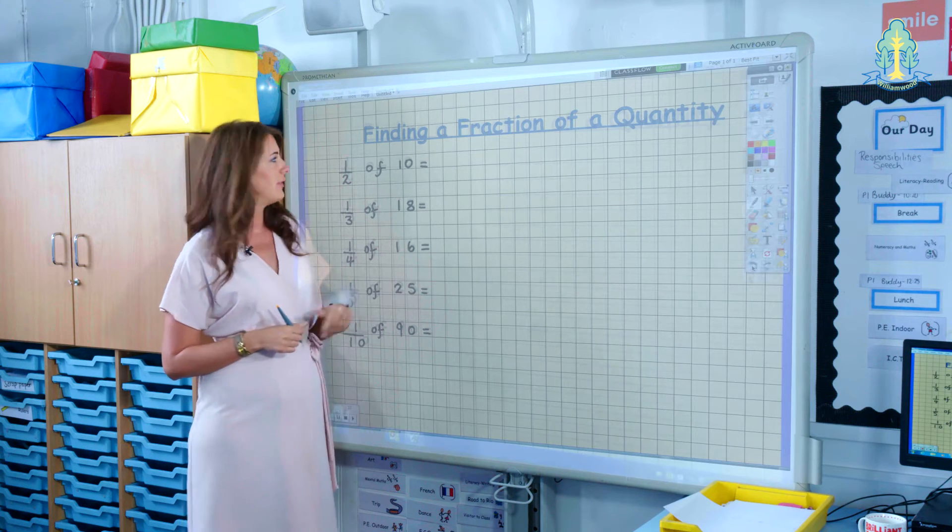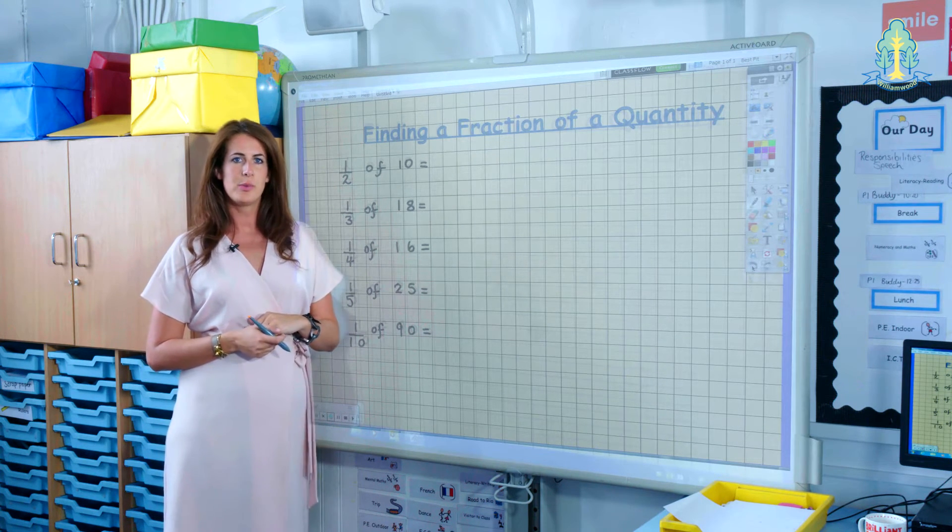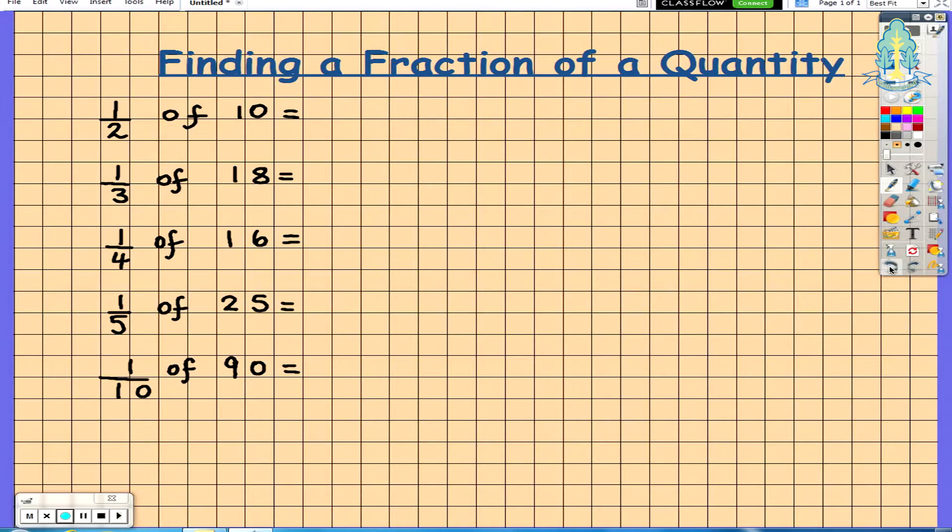This starts in our first level with finding 1 half of 10. The children will apply their knowledge and understanding of dividing a number, and in this case dividing by 2. So finding 1 half of 10, you divide the quantity 10 by 2 which equals 5.